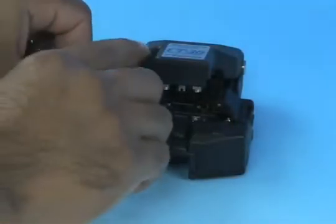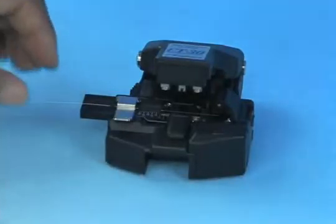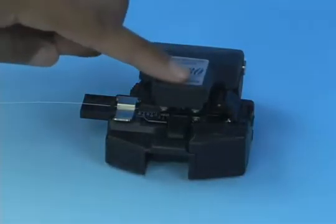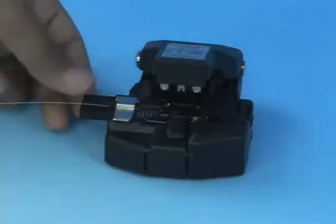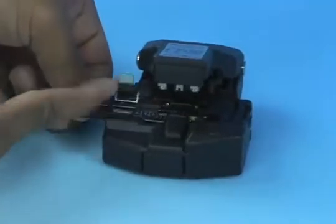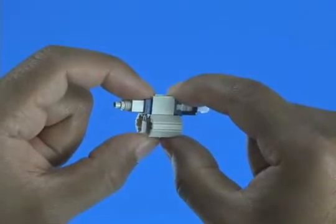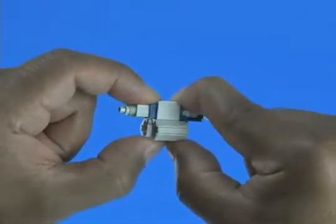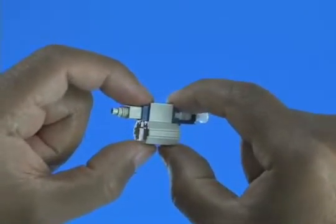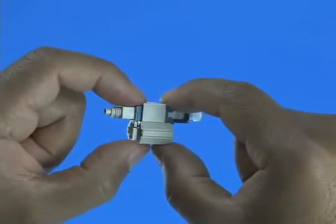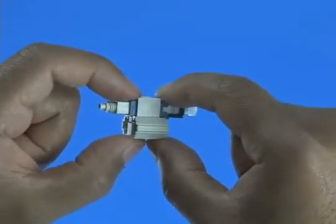Insert the bare fiber into the CT-38 cleaver and cleave to a length of 10.5 millimeters, plus or minus 0.5 millimeters. The wedge clip is engaged at shipment. If the wedge becomes dislodged, squeeze the top and bottom of the wedge clip, ensuring the wedge is inserted into the connector body. A click will be heard.